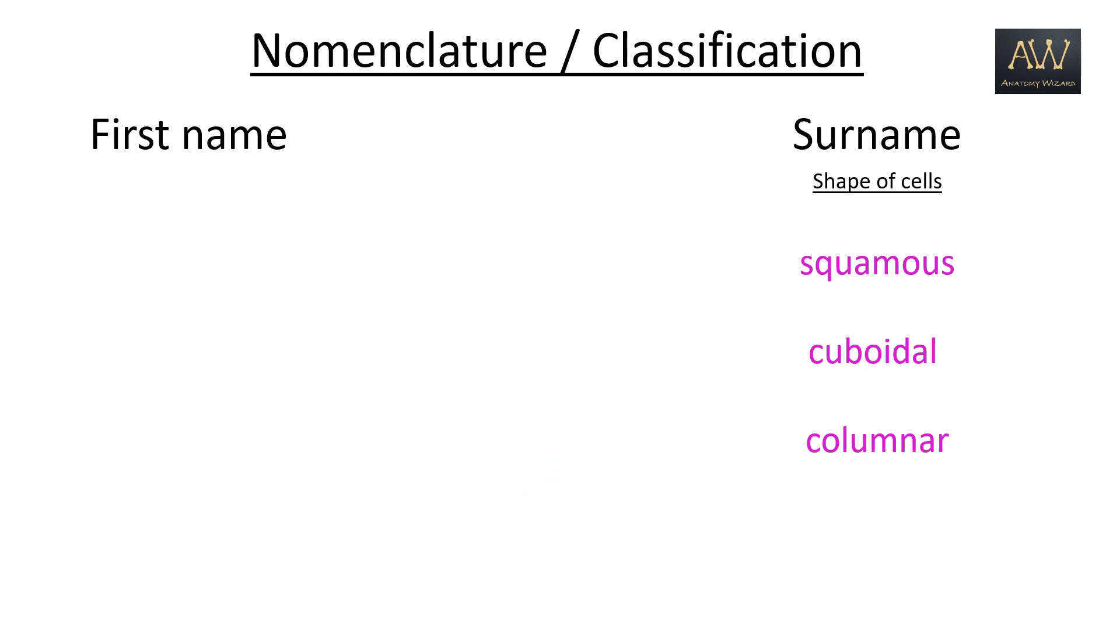Finally, the shape may be columnar, consisting of cells which resemble columns having much more height than width. The nucleus in these cells is oblong or ovoid in shape and is usually located in the lower third of the cell towards the basal surface.